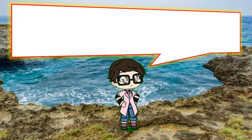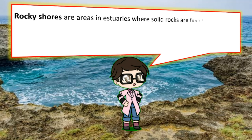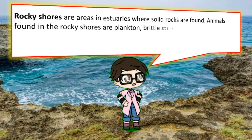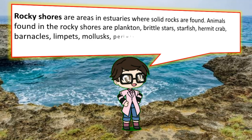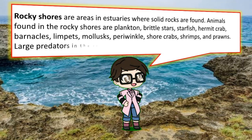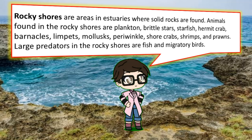Rocky shores are areas in estuaries where solid rocks are found. Animals found in the rocky shores are plankton, brittle stars, starfish, hermit crabs, barnacles, limpets, mollusks, periwinkles, shore crabs, shrimp, and urchins. Large predators in the rocky shores are fish and migratory birds.